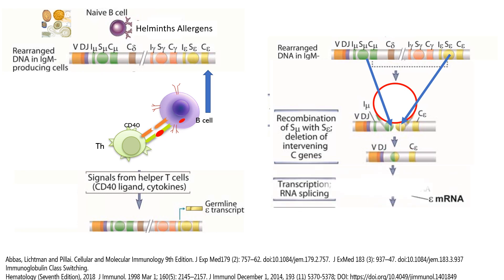And now we have a transcript that goes all the way from the VDJ region which identifies the helminth or the allergen to the mRNA that is only producing the epsilon construct which will translate in an IgE.